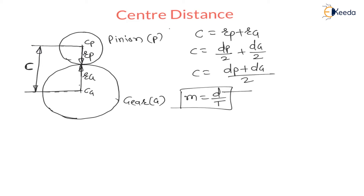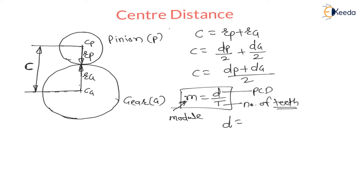Where D is pitch circle diameter and T is number of teeth — this we have seen in the previous lecture — and m is called module. Therefore, pitch circle diameter equals module times number of teeth: D = m × T.